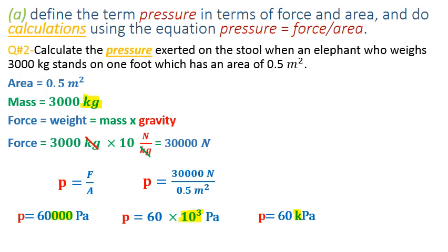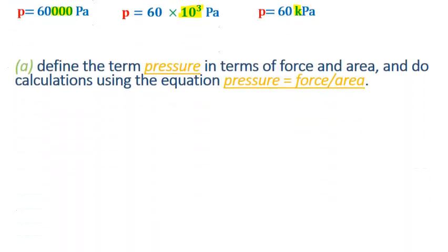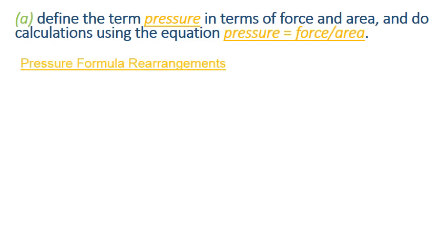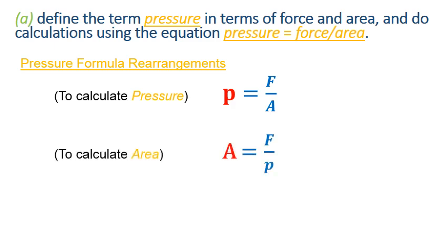Before we move further it is good to understand the pressure formula rearrangements. Because not every time we will be asked just to find out or calculate the pressure but actually we might be in a situation where we can be asked how to calculate the area. If we are to find out the area we just need to simplify make A which is for area our subject and just rearrange the formula in such a way that we can calculate area. Or same case for the force. Remember all these two or three formulas just rearrangement of same idea.